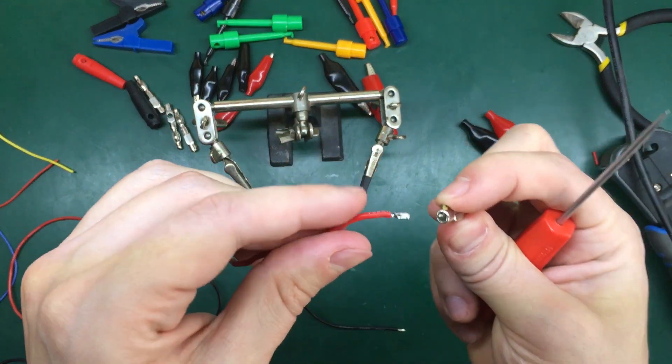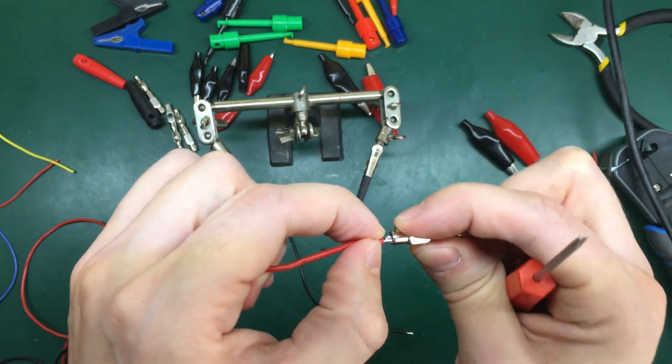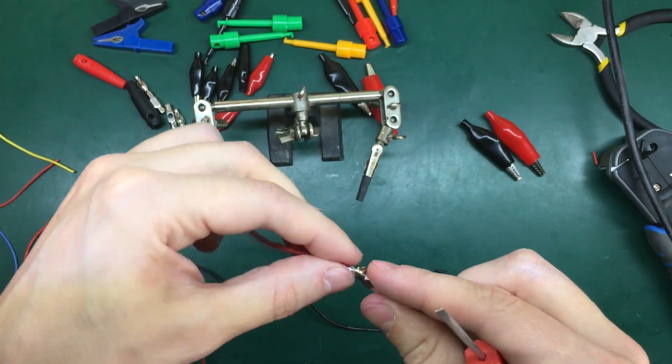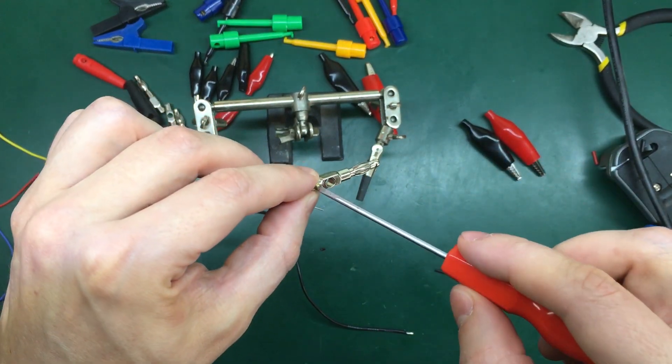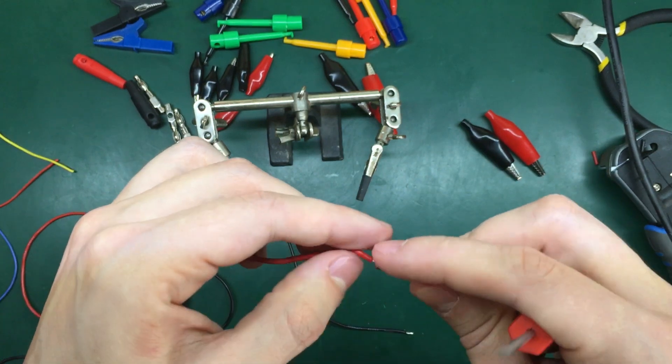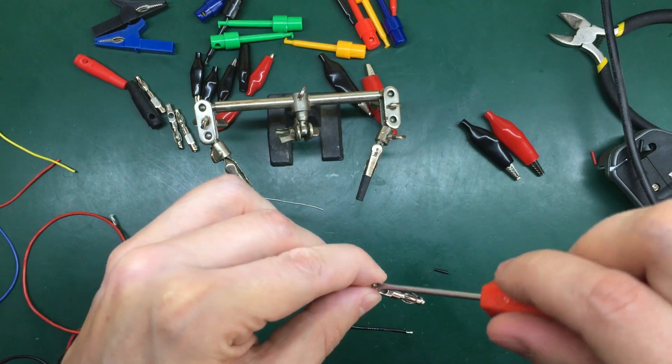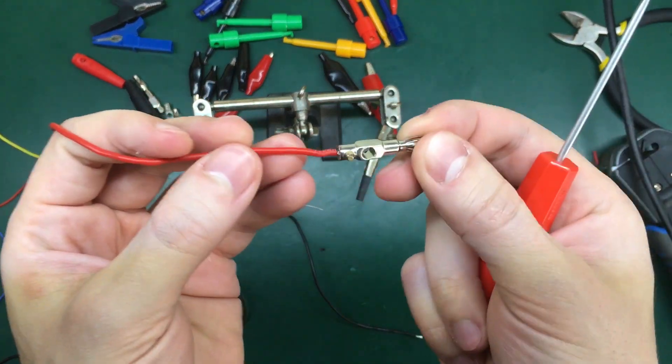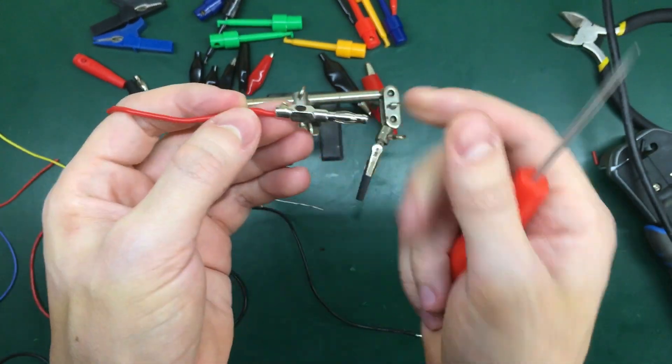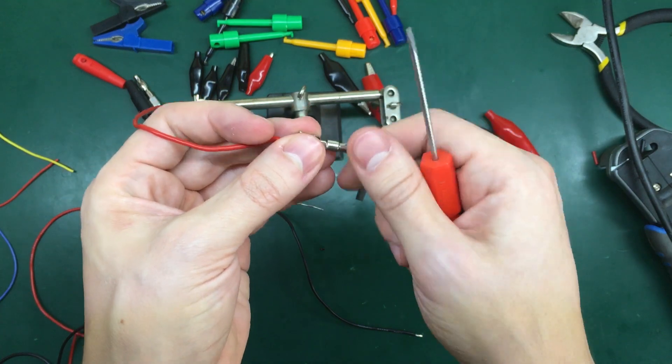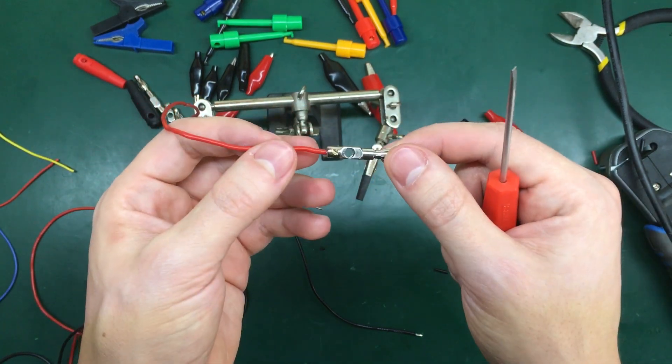Now all I have to do is insert the wire and tighten the securing screw. Now I have a very good and reliable connection with the banana jack. Now I'm going to do the same with the other.